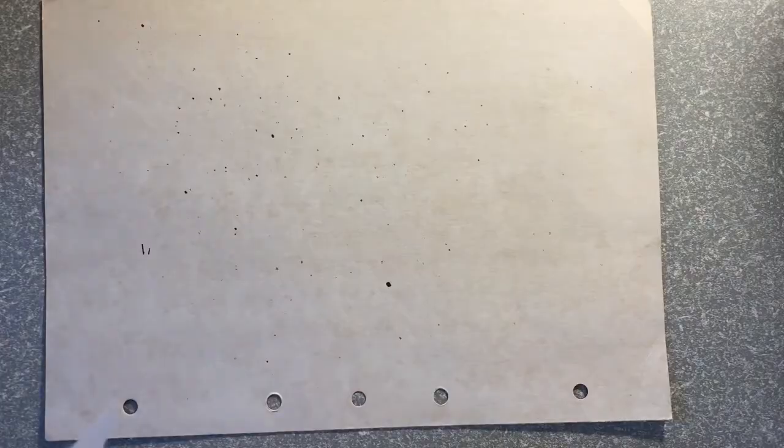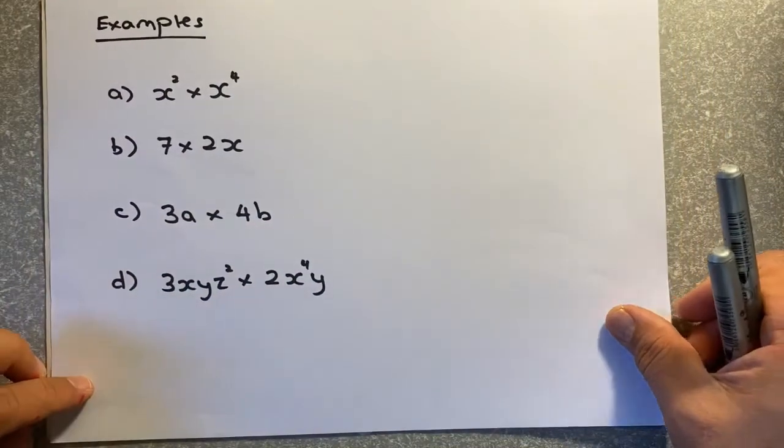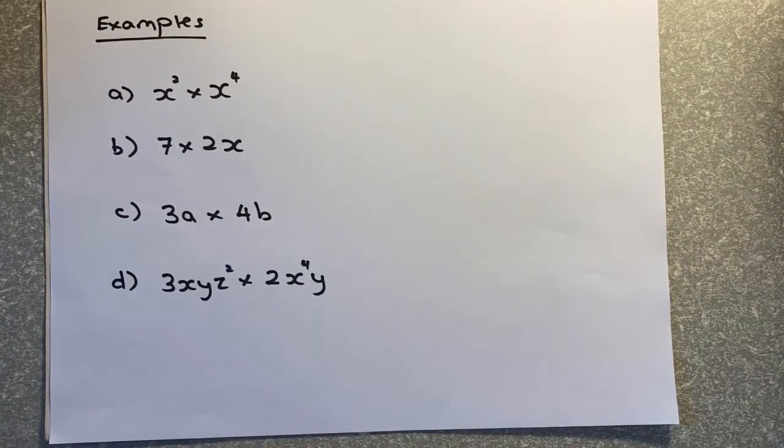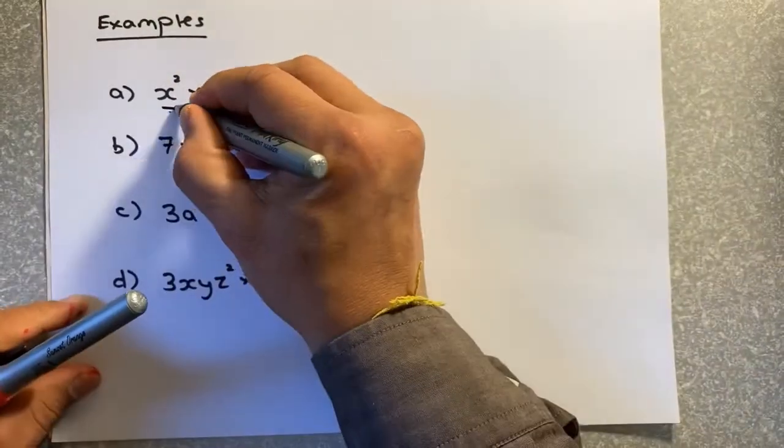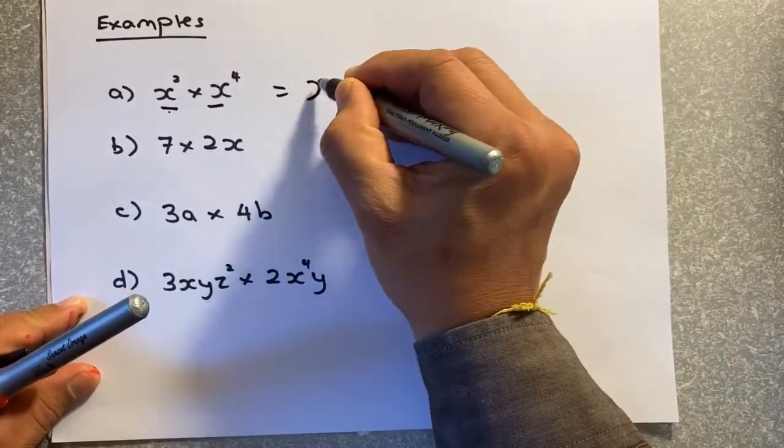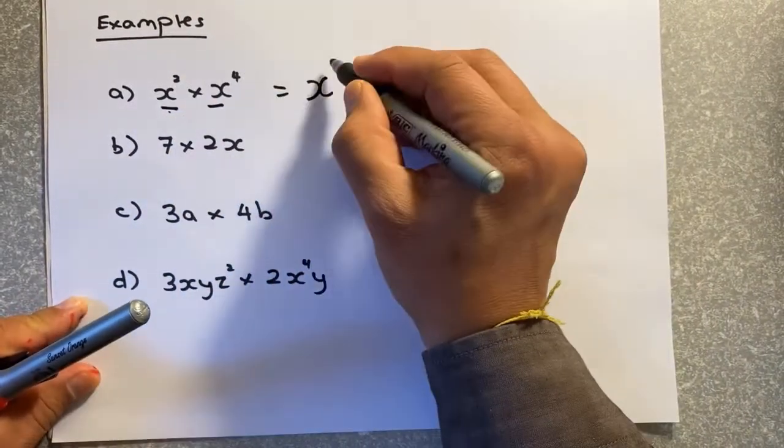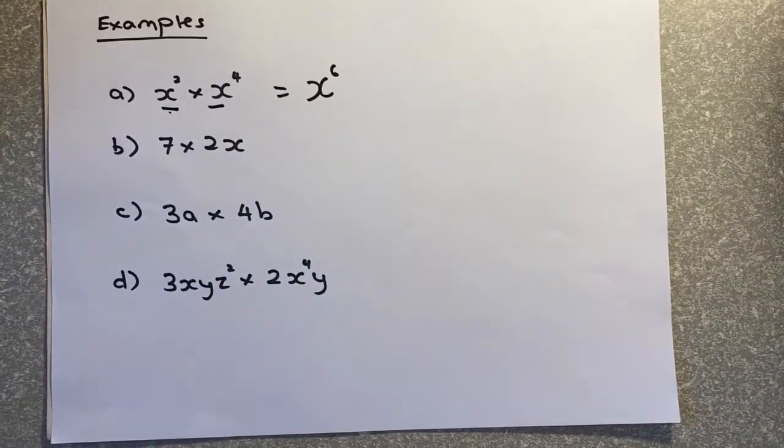We shall look at some examples now, the simple ones. If I have x squared times x to the power of 4, the base are the same, so what you do, x, and then you just add 2 plus 4, and that will give you 6. Simple.